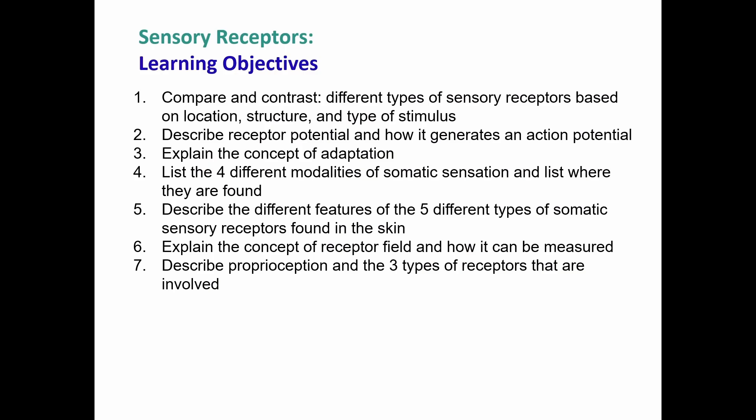We're going to get into the receptors as well as the somatic sensory pathways — what's picking up these stimuli and how we get it to the central nervous system. We'll cover sensory receptors based on location, structure, and type; the modalities for somatic sensation; different types of somatic sensory receptors and the receptor field; and then the somatic sensory pathways.